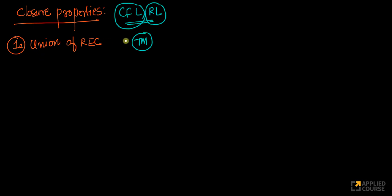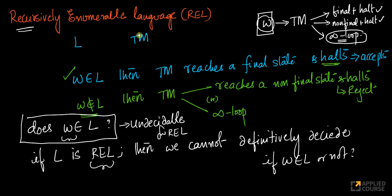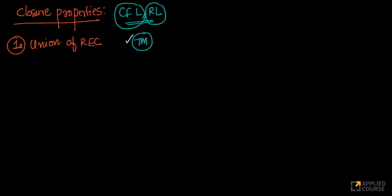Construction of Turing machines is fairly easy. The important thing to remember is that for Turing machines there are always three possibilities: final state and halt (accept), non-final state and halt (reject), or infinite loop. There are three possibilities, and this is what makes the problem very interesting as far as closure properties are concerned.